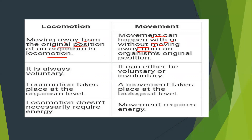You close your eyelids — that's a movement. Locomotion is voluntary, but movement can be voluntary or involuntary, both. Locomotion takes place at the organism level; the whole organism moves from one place to another. But movement takes place at the biological level, like movement of a hand or blinking of your eyelids. Locomotion does not necessarily require energy, but movement does require energy.